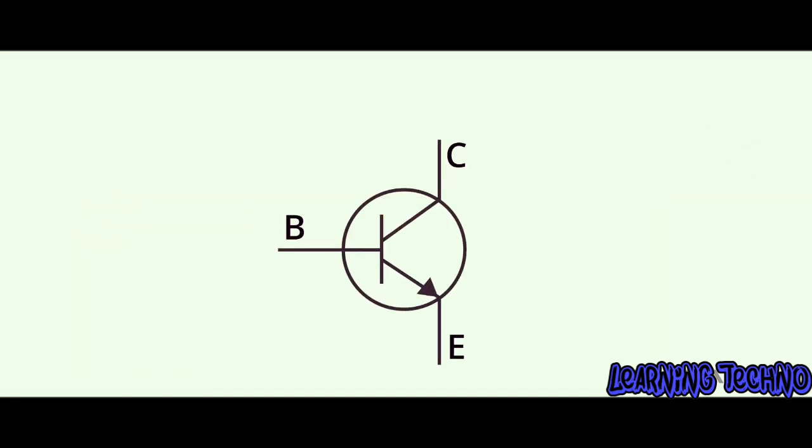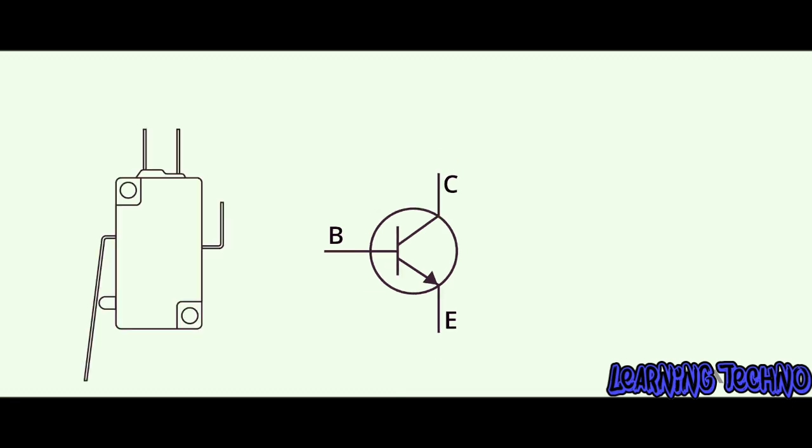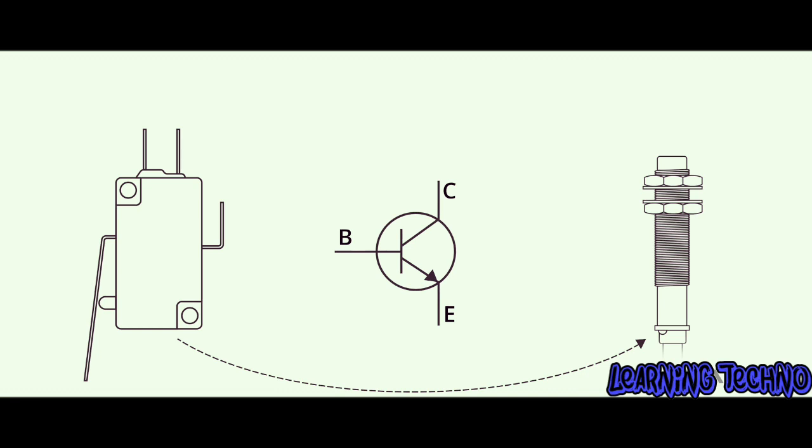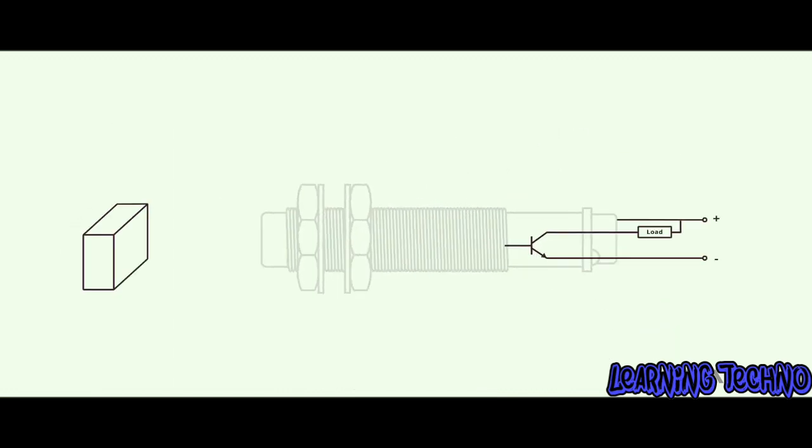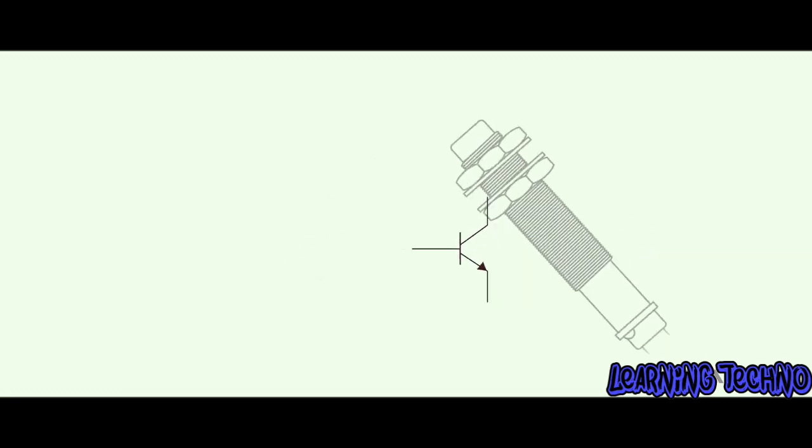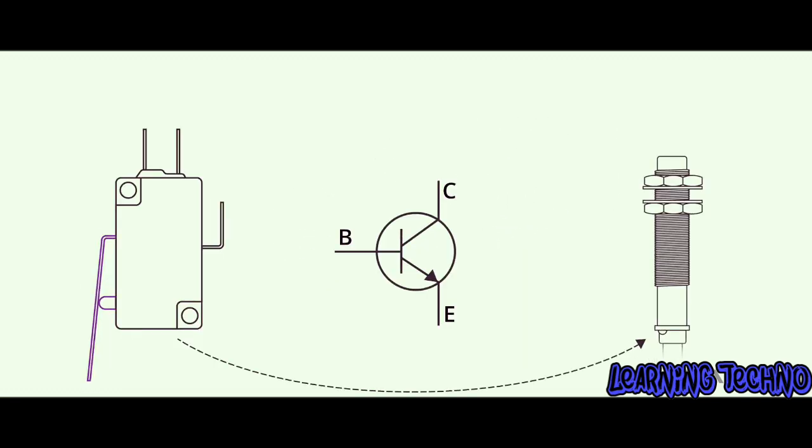Transistors are used in industry as well. For example, traditional limit switches are being replaced with active proximity sensors. The output of an active proximity sensor is a transistor switch. With no moving parts and nothing to wear out or break down, the active proximity switch is the hands-down winner over a mechanical limit switch.